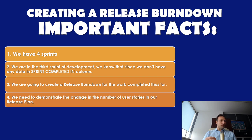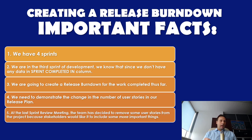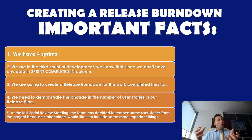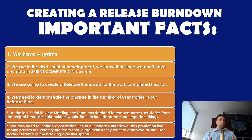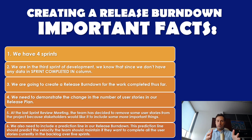We need to demonstrate the change in number of user stories in our release plan. At the last sprint review meeting, the team has decided to remove some user stories from the project because stakeholders would like it to include some more important things. We also need to include a prediction line in our release burndown, and this prediction line should predict the velocity the team should maintain if they want to complete all the user stories currently in the backlog over five sprints.